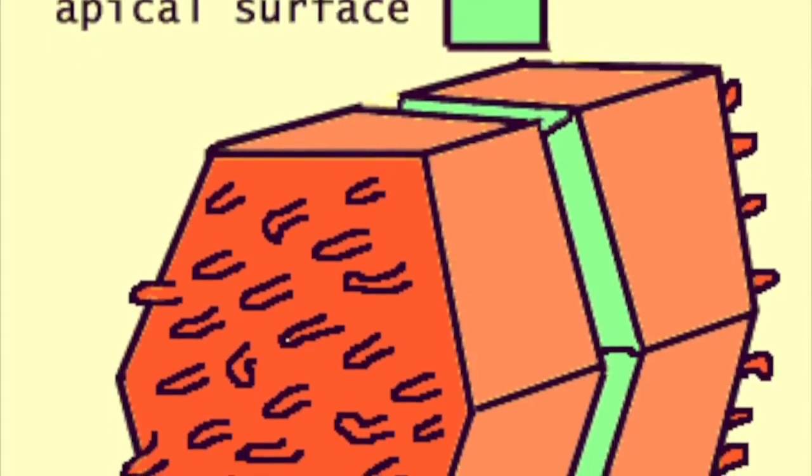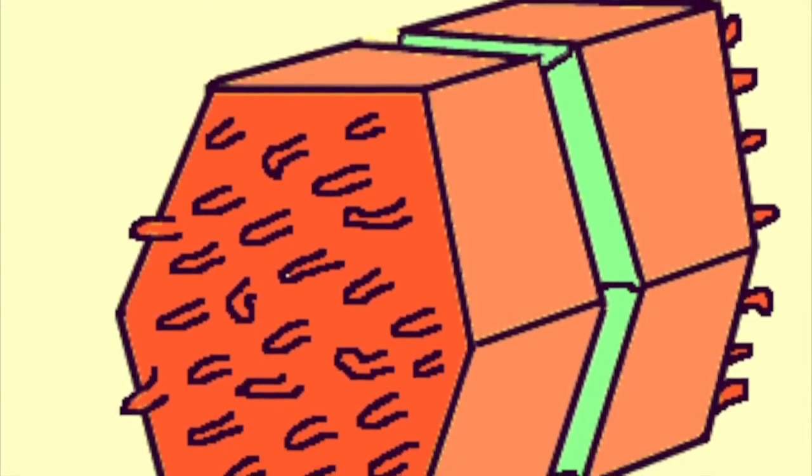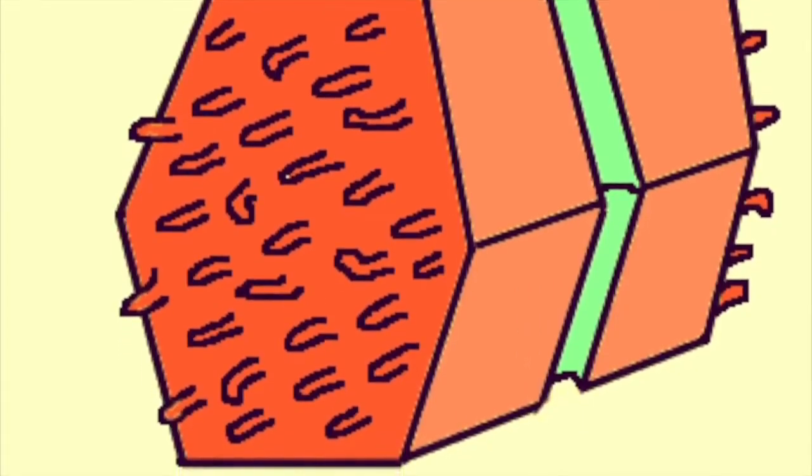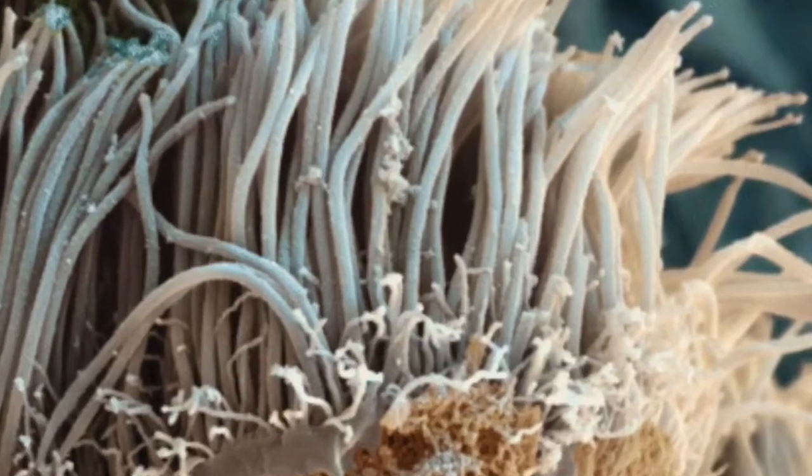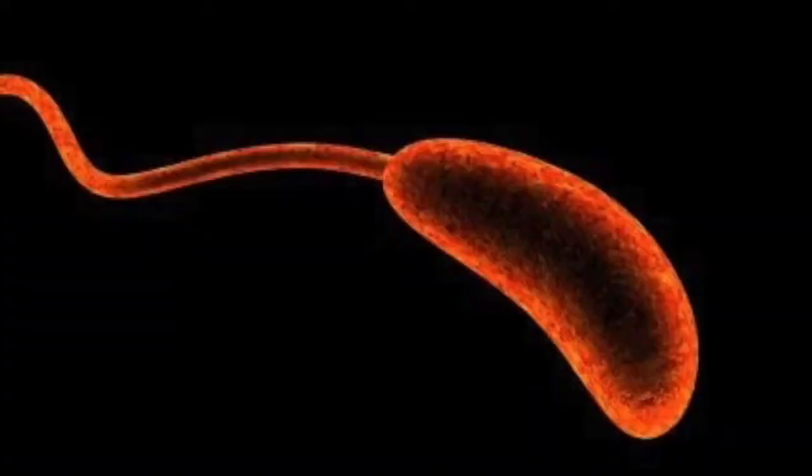Apical modifications are specialized to carry out functions that occur at the apical surface. And under the apical modifications are the cilia, microvilli, stereocilia, and flagella.